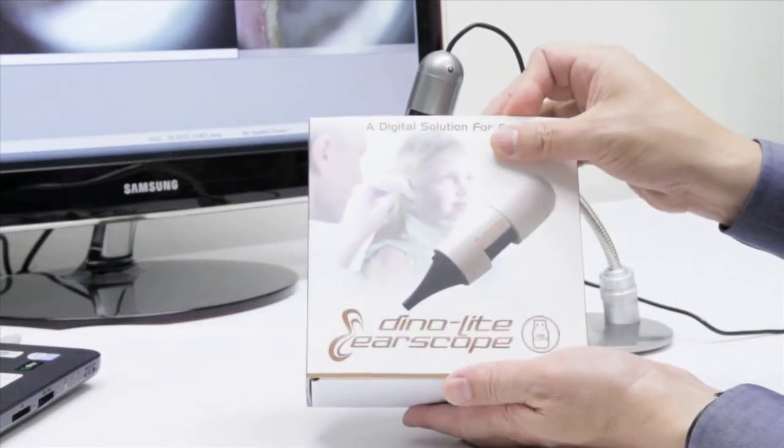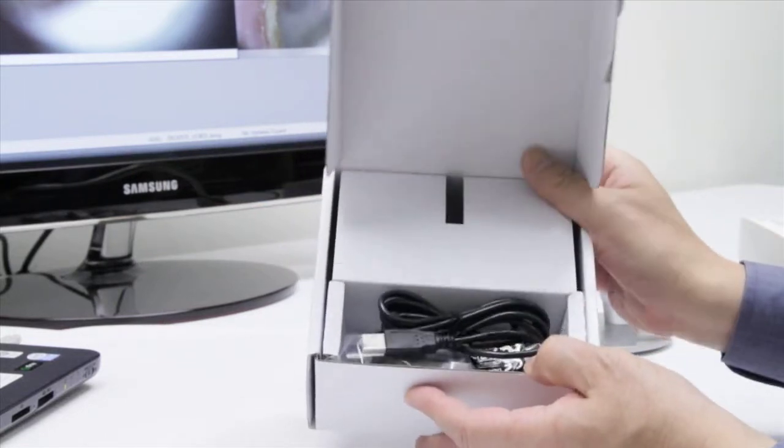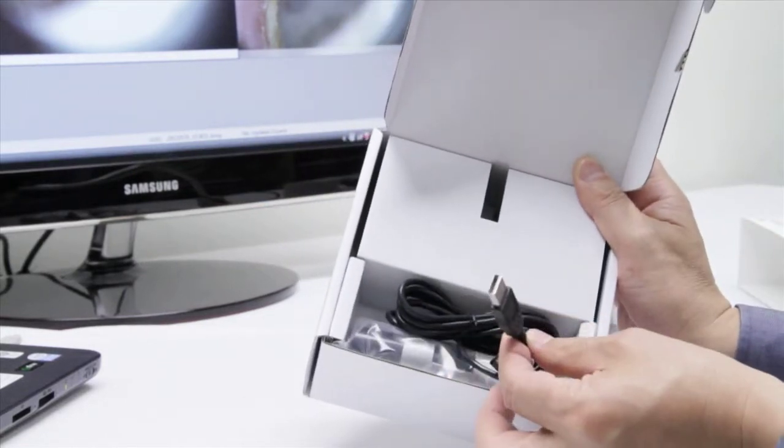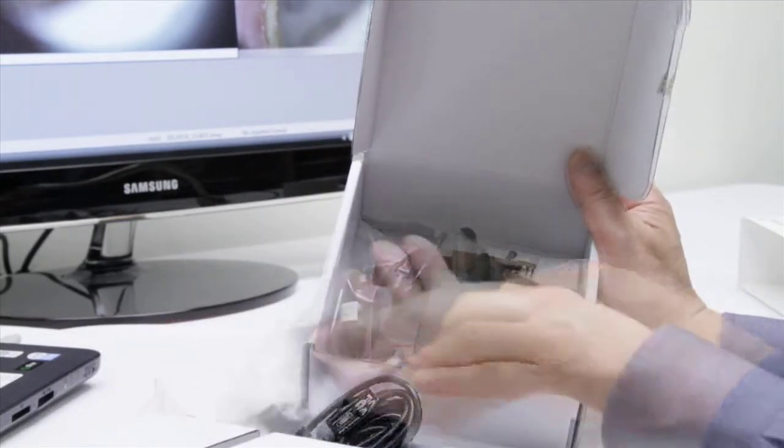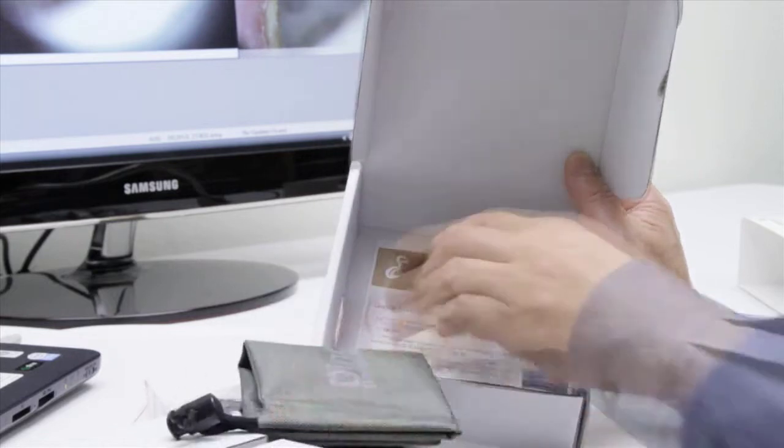Upon unboxing you will notice the unit itself as well as the USB 2.0 connection. Underneath that you have your different diameter disposable specula, a carrying bag, installation CD, as well as your instruction guides.